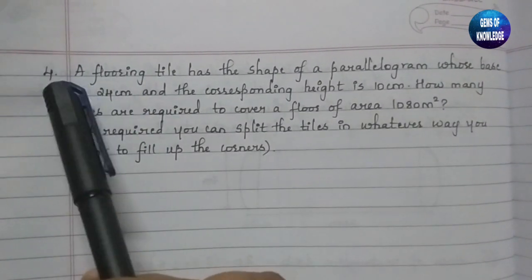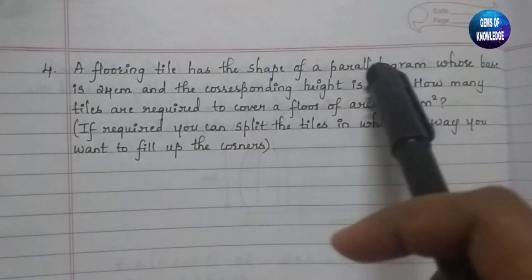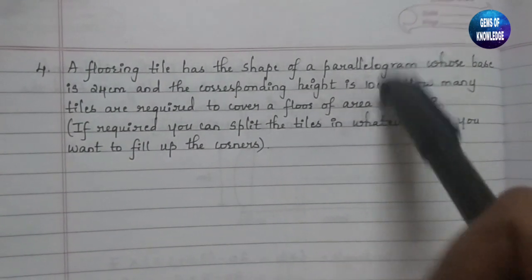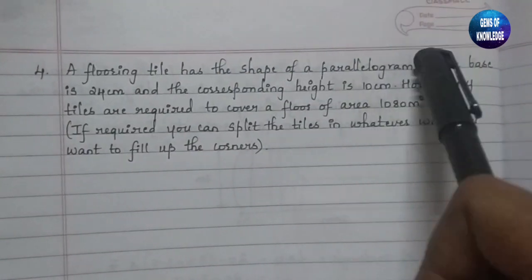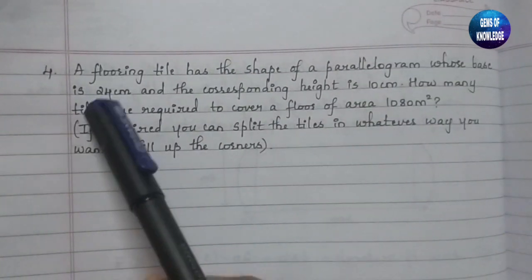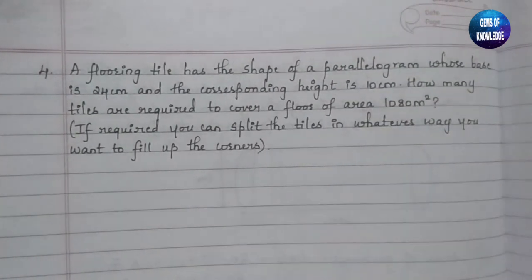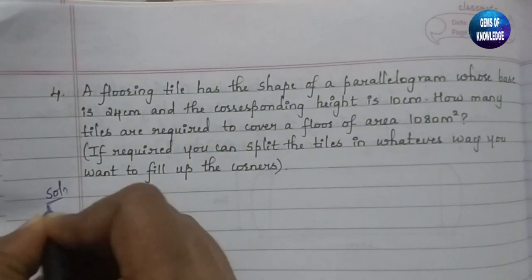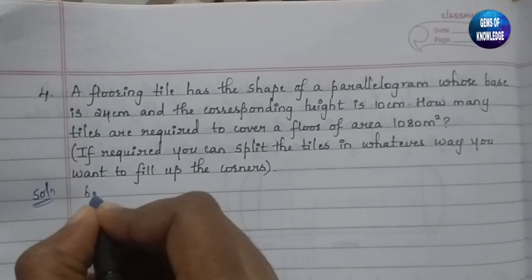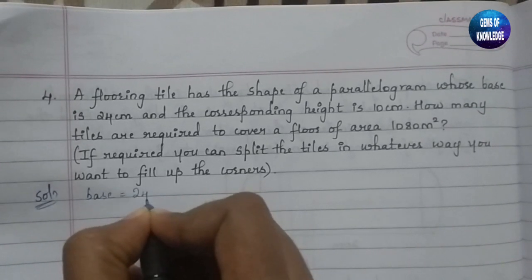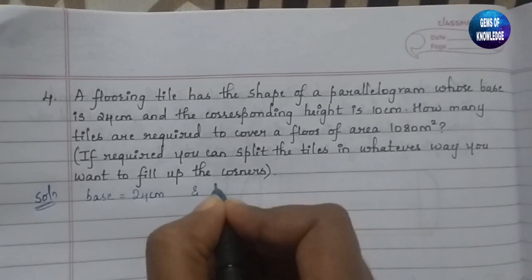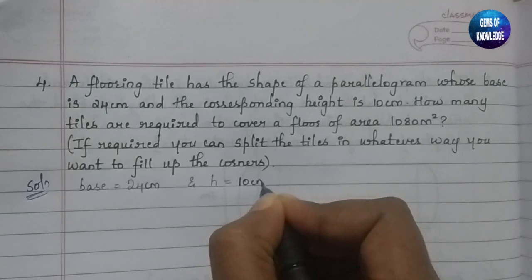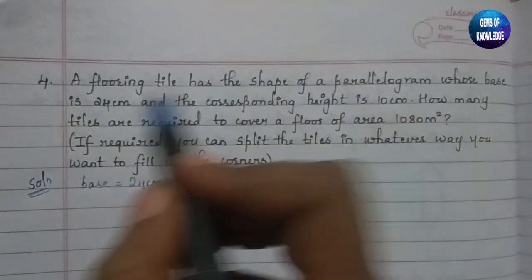The fourth question states: a flooring tile has the shape of a parallelogram whose base is 24 cm and the corresponding height is 10 cm. So the flooring tile is in the shape of a parallelogram, with base given as 24 cm and height as 10 cm. Let us write what is given: base equals 24 cm and height equals 10 cm.